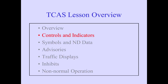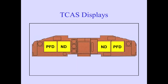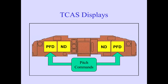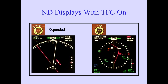Let's now discuss the controls and indicators. The EFAS control panels and the ATC transponder panel control the display of TCAS information. TCAS pitch commands are displayed on the PFD. TCAS messages and symbols are displayed on the ND. The traffic switch labeled TFC on the EFAS panel controls the ND display. Pushing the TFC switch either displays TCAS data or turns off the data. With TFC on, the ND displays advisory data with either approach, VOR, or MAP selected.